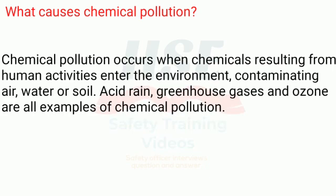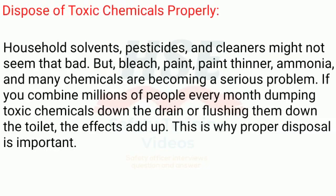What causes chemical pollution? Chemical pollution occurs when chemicals resulting from human activities enter the environment, contaminating air, water, or soil. Acid rain, greenhouse gases, and ozone are all examples of chemical pollution. It is important to dispose of toxic chemicals properly.